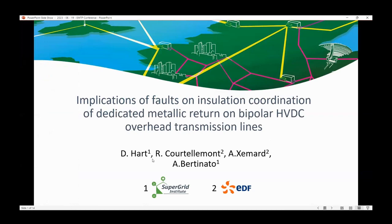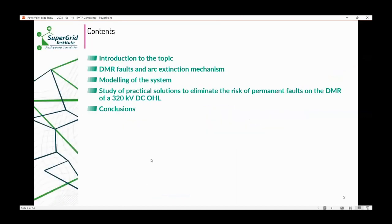I will present today what I presented last week at the IPSC conference. It's a paper I prepared with my colleagues from IDF, Remy Cortellemont and Alain Zemart, and a colleague from SuperGrid Institute, Alberto Bertinato. The title is Implication of Faults on Insulation Coordination of Dedicated Metallic Return on Bipolar HVDC Overhead Transmission Lines. The presentation today is expanded to show how I did it in EMTP. I'll first introduce you to the topic of DMR and the problem with dedicated metallic return, then DMR faults and arc extinction mechanism, how we modeled the system in EMTP, then the study of practical solutions to eliminate the risk of permanent faults of DMR of 320 kV DC overhead lines, and some conclusions.